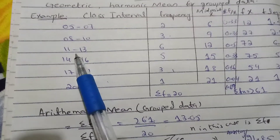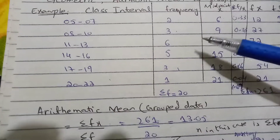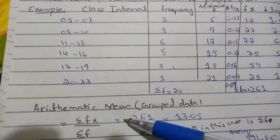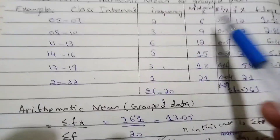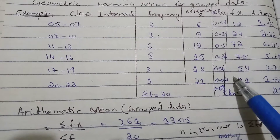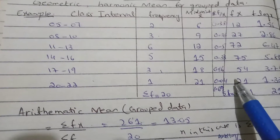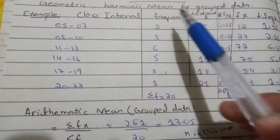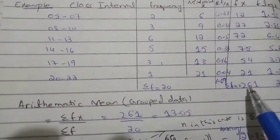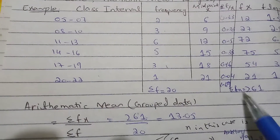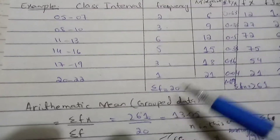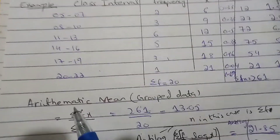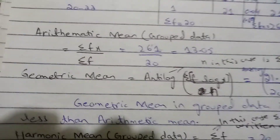We have our frequency table and we need to calculate the arithmetic mean. We need another column: f into x. For example, 2 into 6 gives 12; 3 into 9 gives 27 — and so on. After making the column of f times x and adding all values, we get summation fx equal to 261. The total frequency summation f is 20. Dividing 261 by 20 gives us the arithmetic mean for grouped data.